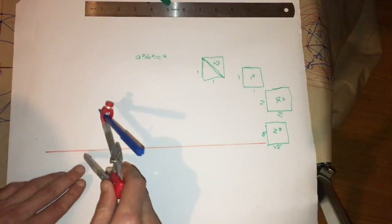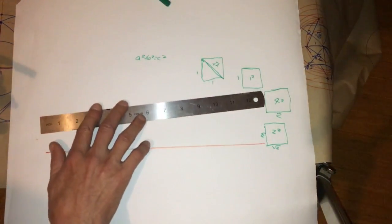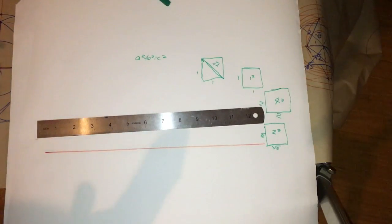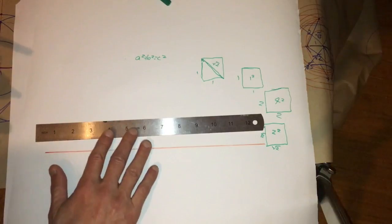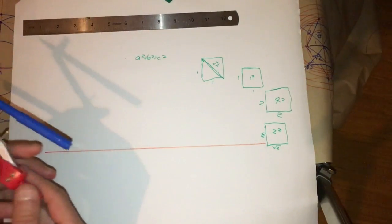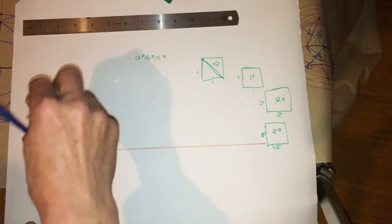Compass and straight edge geometry isn't just about nice pretty shapes. It's basically a form of calculator. You can use it to do calculations. So again, let's begin the vesica. All things flow from the vesica.